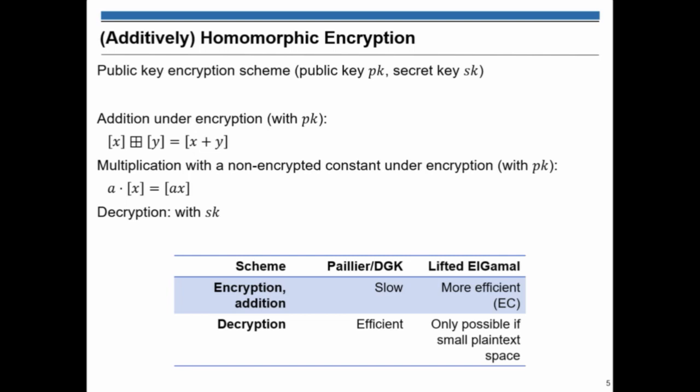There's lots of cryptosystems, homomorphic encryption cryptosystems in the wild, but for this purpose, there are two variants that have been used before. One is based on Paillier and DGK, which is kind of encryption is slow, but the decryption is very efficient.